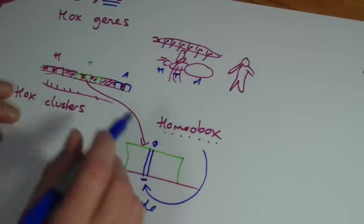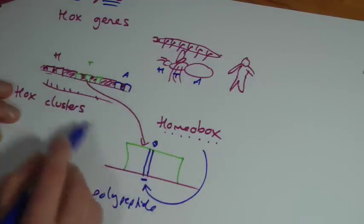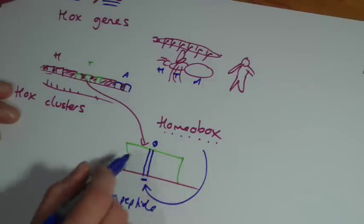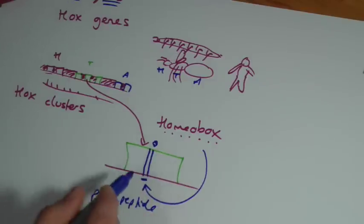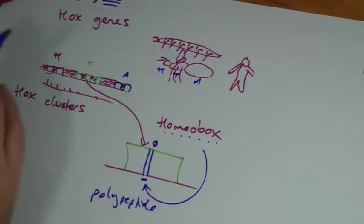The homeobox is necessary for the homeobox gene to be switched on, and again this is very well conserved throughout all organisms. The same homeobox amino acid sequence comes up again and again and again.